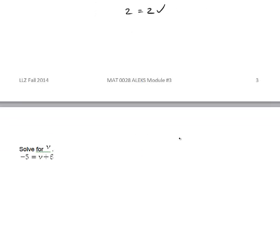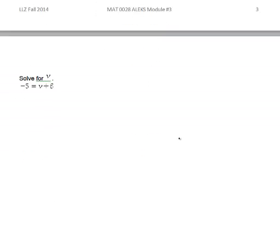Okay, let's try another one. Here we're solving for v. My equation is negative 5 equals v plus 6. Again, I want to get v by itself. So what do I do? I'm adding 6 to it.